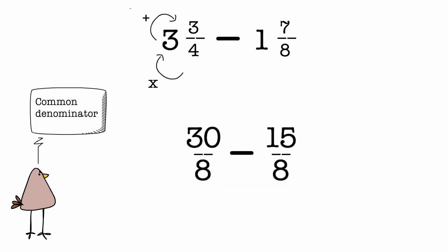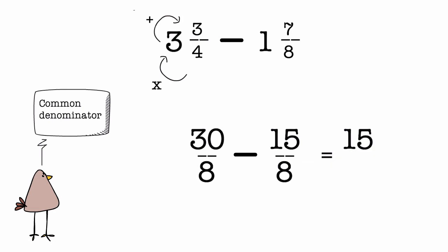Now since the denominators are the same, things become easy and we can just subtract the numerators. So 30 minus 15 gives us 15. And don't forget the denominator 8. So we have our answer and it is an improper fraction.